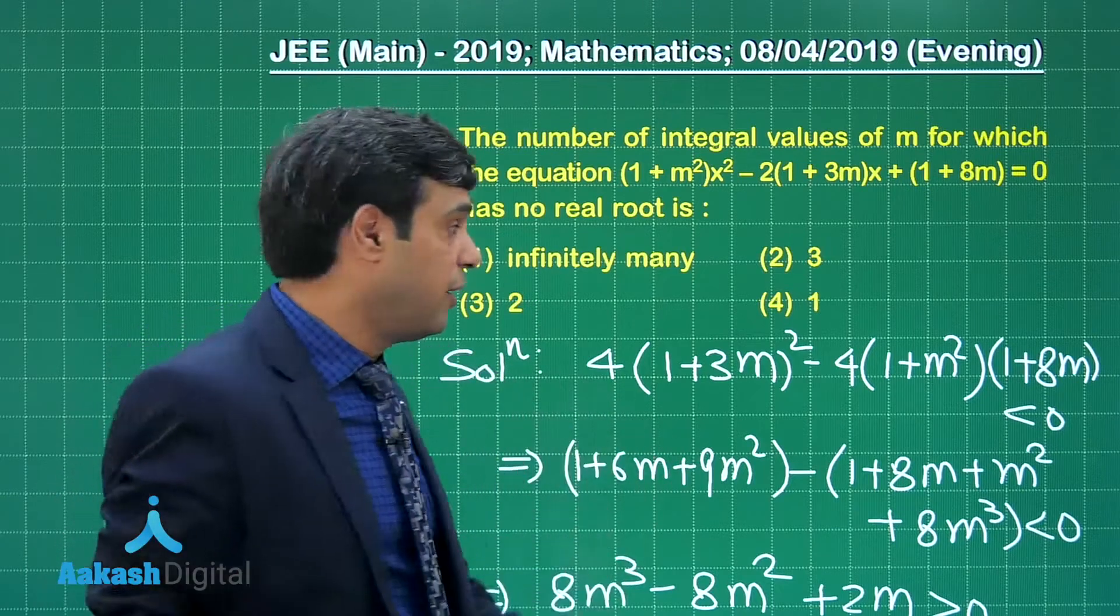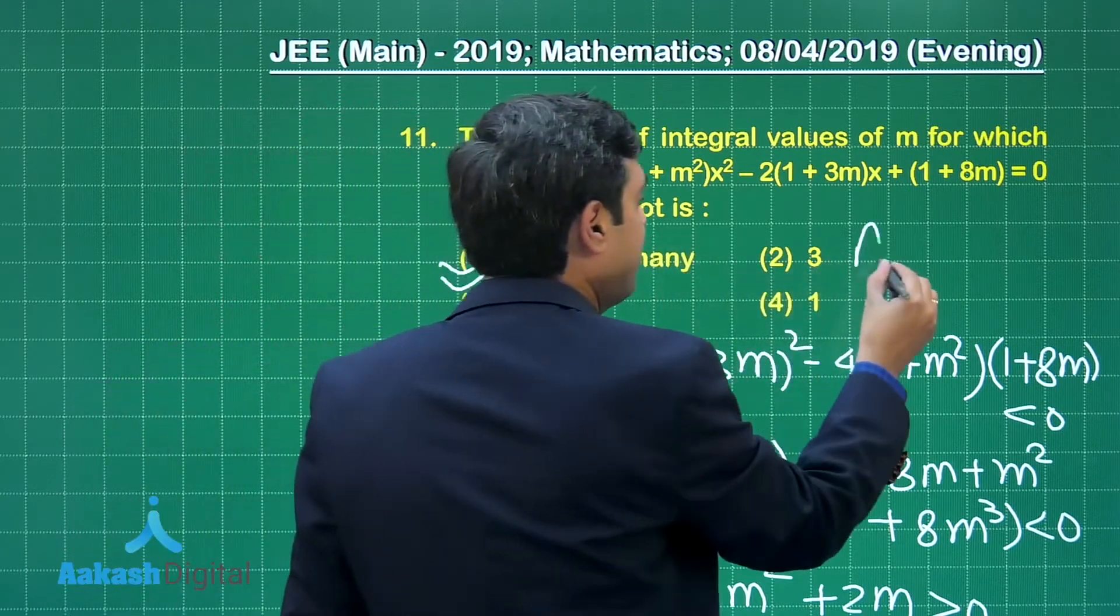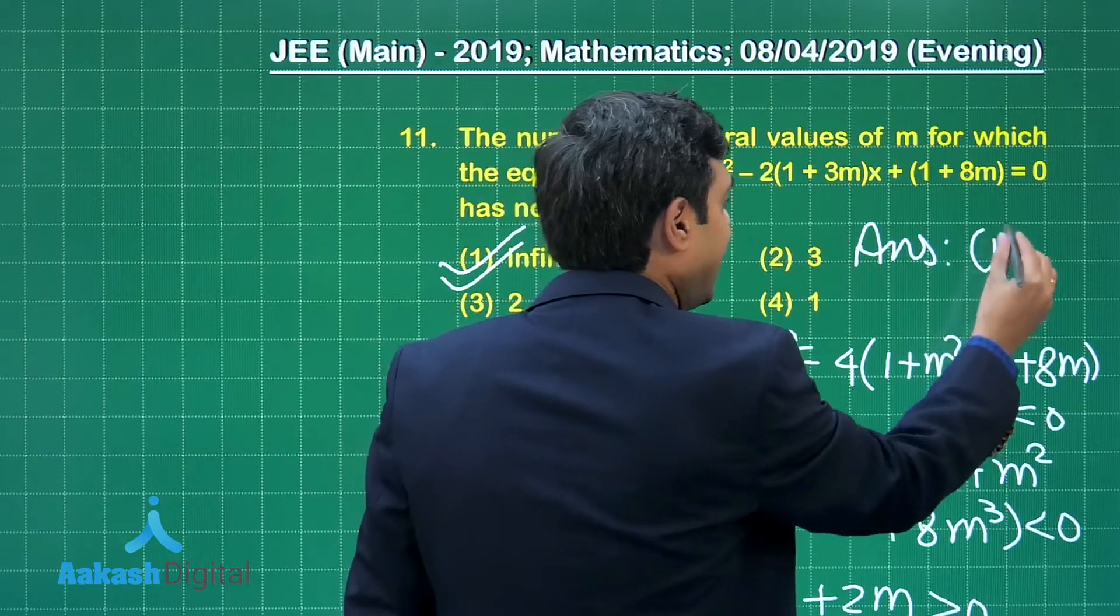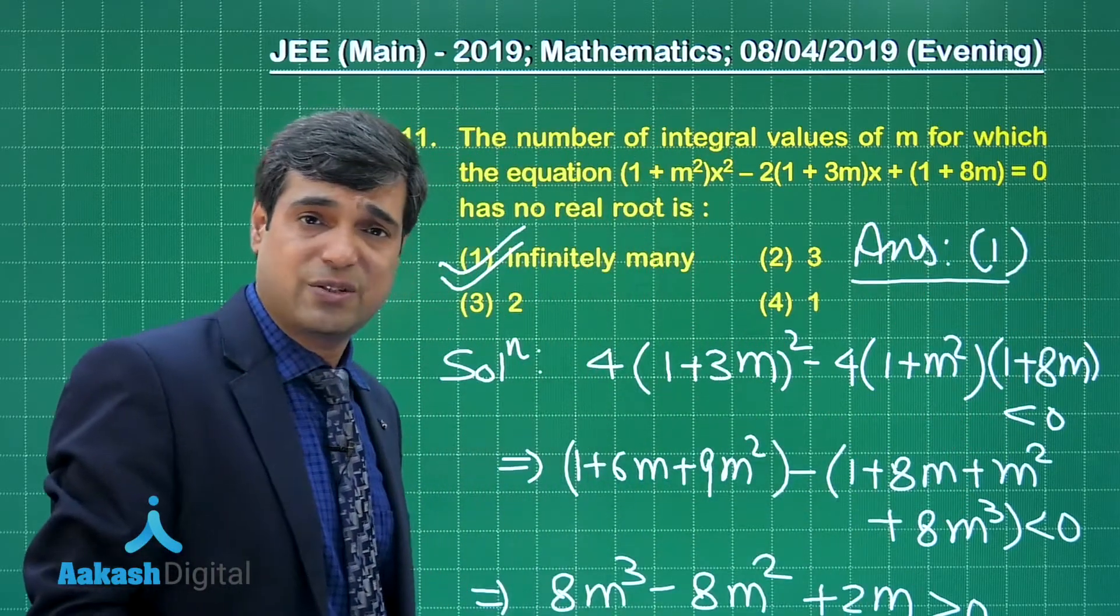Infinitely many, because m is greater than 0, so 1, 2, 3 and so on. So simply the result is infinitely many solutions. Correct answer is option number 1. Let us move on to the next question.